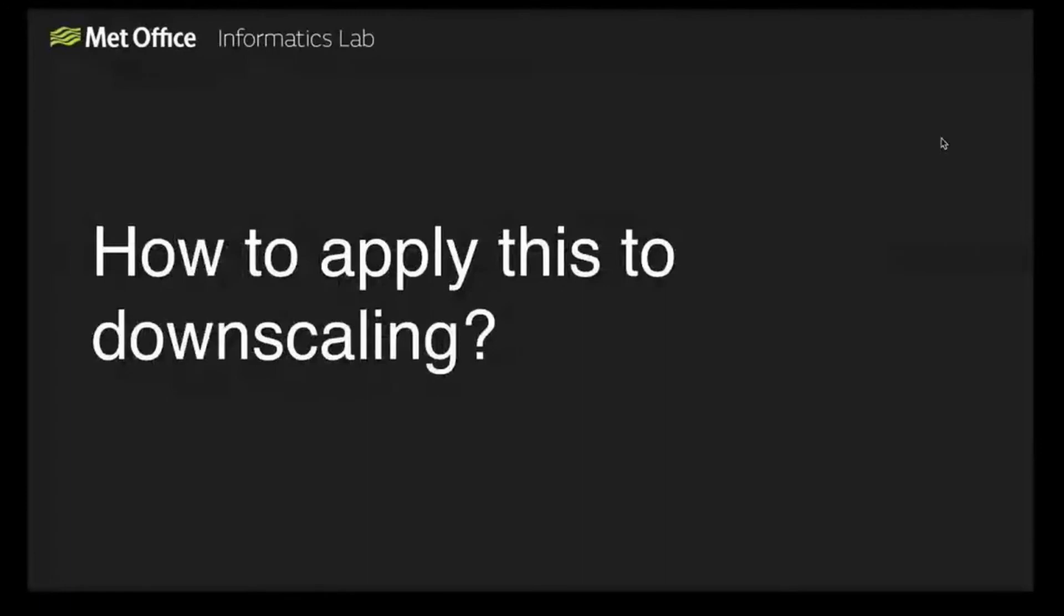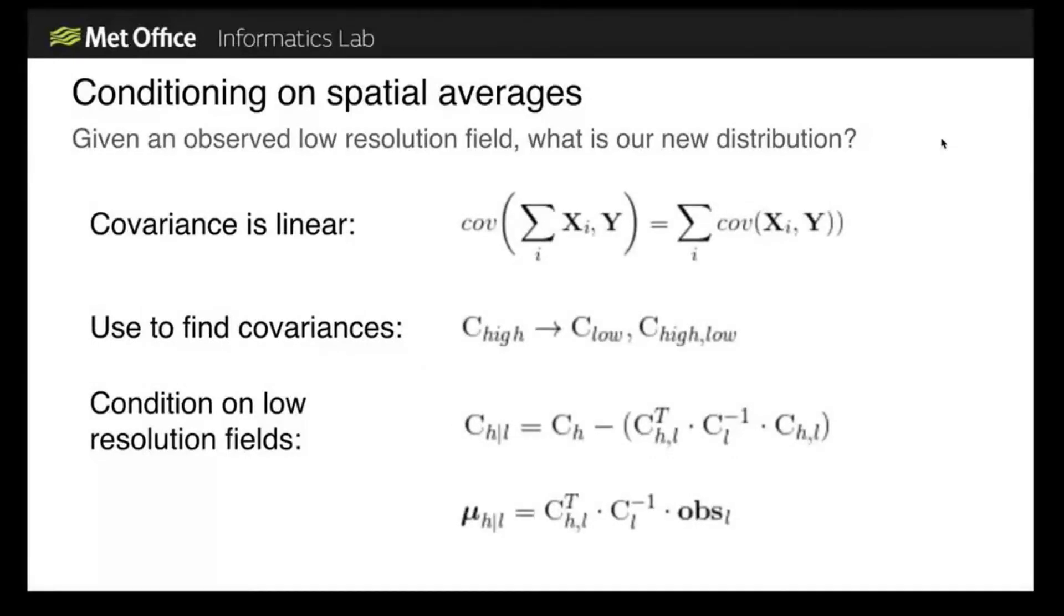How can this be applied to downscaling? It turns out it's quite directly applicable. As long as we're treating the Gaussian case, the covariance is linear and everything can be treated linearly. Just the same as we can condition on point values of the field, we can also condition on spatial averages or linear combinations of these. This allows us to have a way of conditioning on a low resolution field and getting a posterior distribution for a higher resolution version of the field.